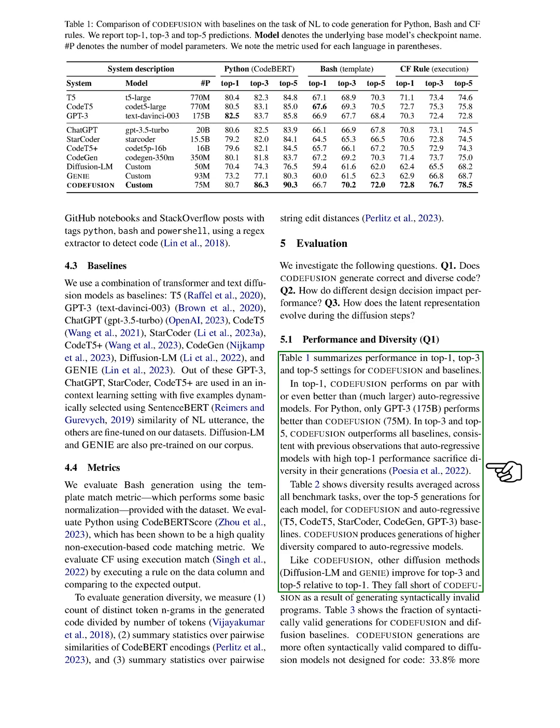Other diffusion methods also improve for top-3 and top-5 relative to top-1, but they fall short of our system because they often generate syntactically invalid programs.